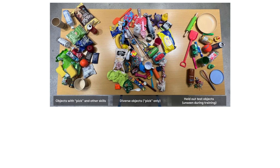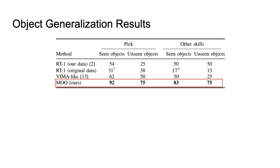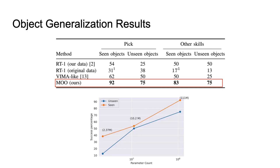In addition to the algorithmic contributions of MOO, we also study how an object-centric dataset can enable generalization. While the RT1 dataset contained over 130,000 demonstrations of many manipulation skills for 17 objects, we collect less than 10,000 picking demonstrations but increase object diversity to over 100 different objects. We compare the object generalization performance of MOO against RT1 and VIMA by evaluating on 13 seen objects and 8 unseen objects for a variety of manipulation skills. We find that MOO is able to perform well on objects seen in the training dataset, but also generalizes to novel held-out objects. In addition, we find that this generalization performance of MOO increases with model capacity.